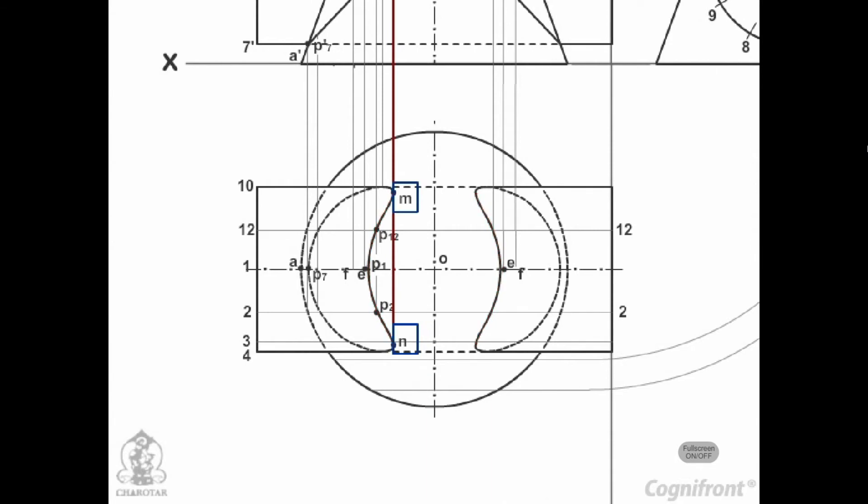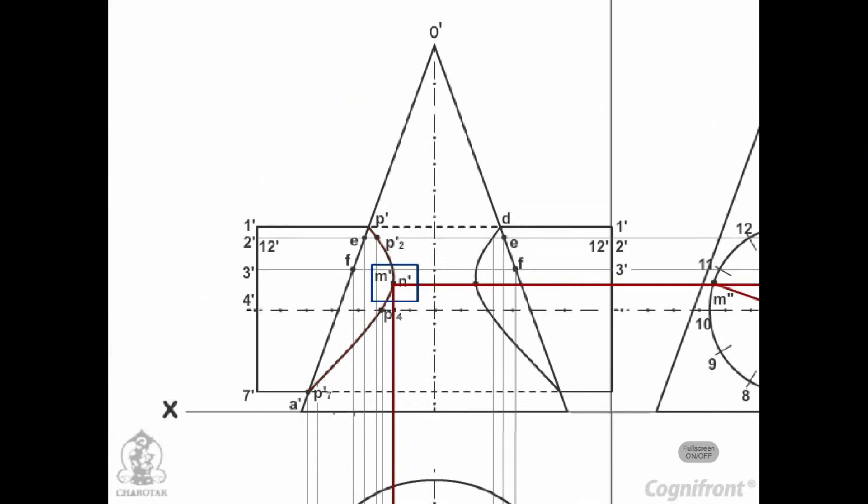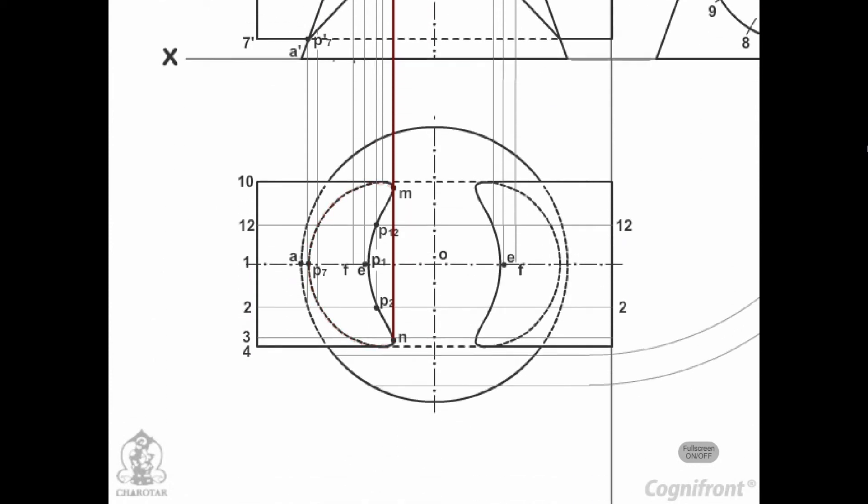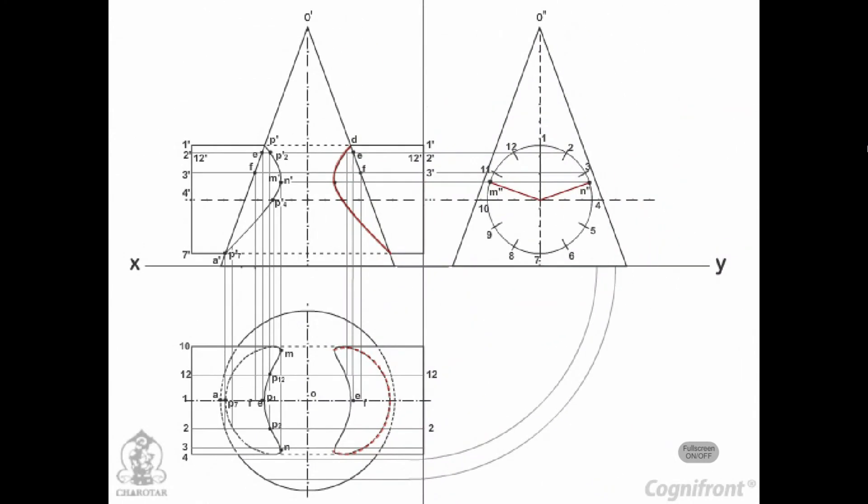Draw curves through these points in both the views. The back curve in the front view will coincide with the front curve. In the top view, a part of the curve will lie hidden and hence it will be dotted. Draw similar curves on the right-hand side of the axis of the cone.